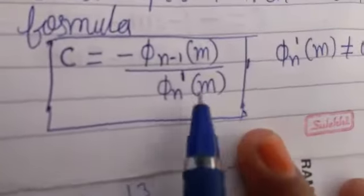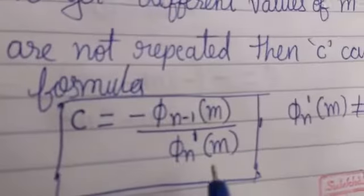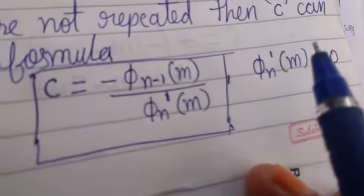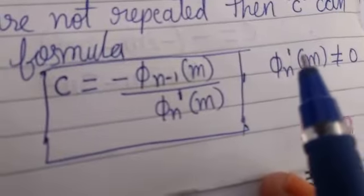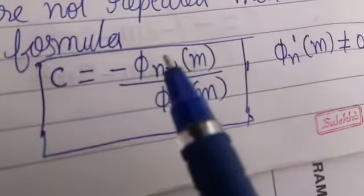The formula is c = -φ_{n-1}(m) / φₙ'(m), provided the denominator is not equal to 0. Whenever m values are distinct, c can be written as -φ_{n-1}(m) / φₙ'(m).